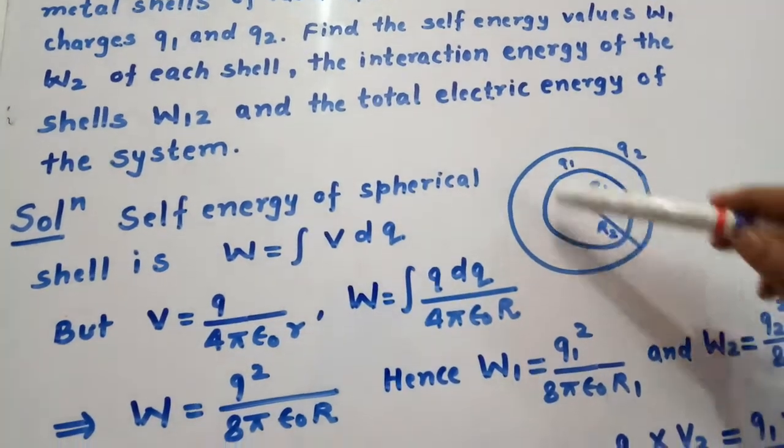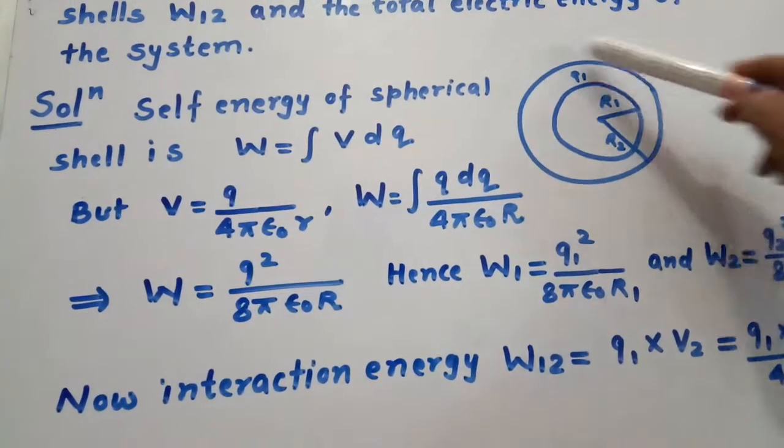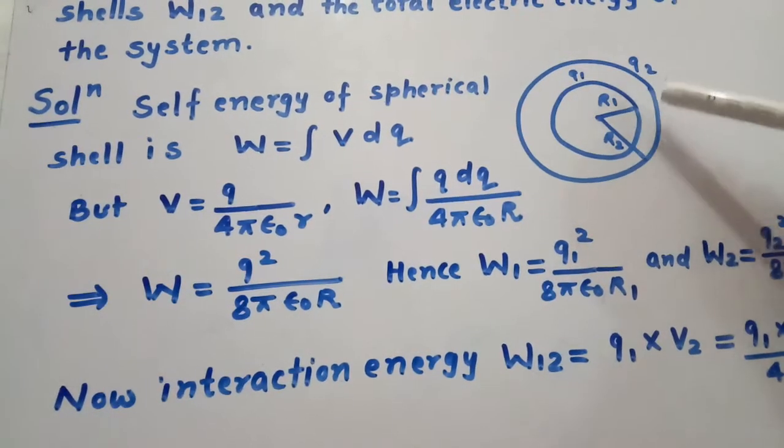Here these are two concentric shells. This has radius r1 and charge q1, and this shell has radius r2 and charge q2.